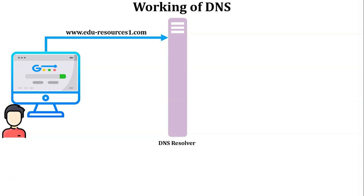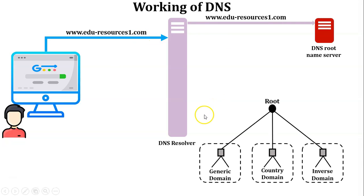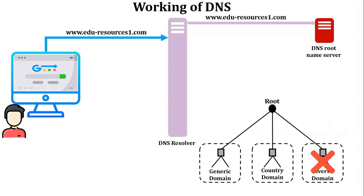The DNS resolver sends this URL to the root server. The root server is connected with three main domains: generic domain, country domain, and inverse domain. The purpose of the inverse domain is mapping an IP address to a domain name. But here, the DNS resolver is sending a website name, so the root server will not contact the inverse domain. The root server has two options — generic domain and country domain. In our example, the top-level domain is .com, which is a three-character domain name belonging to the generic domain, so the root server contacts the generic domain.